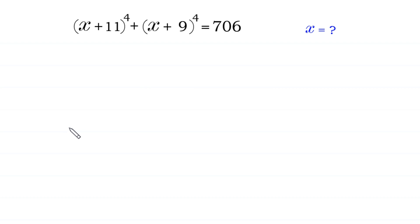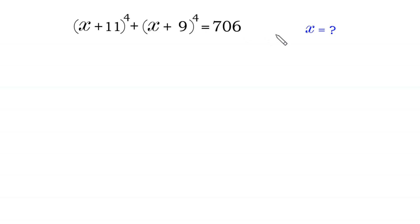Hello, welcome to how to solve this very nice algebra equation: (x + 11) to the power 4 plus (x + 9) to the power 4 is equal to 706. We need to find all possible values of x.